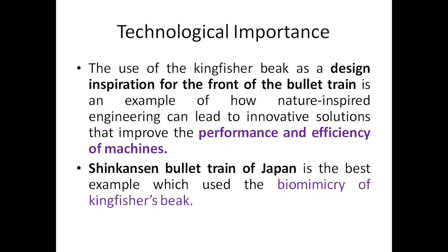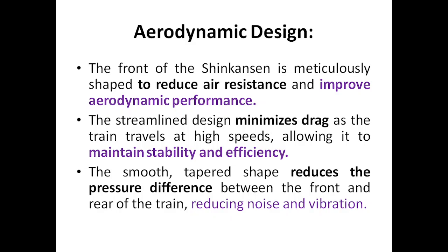The bullet train of Japan is the best example of biomimicry of the kingfisher beak. Biomimicry involves replicating the biology of a living organism in engineering design. The front part of the Shinkansen bullet train is meticulously shaped to reduce air resistance and improve aerodynamic performance. The streamlined design minimizes drag as the train travels at high speed.